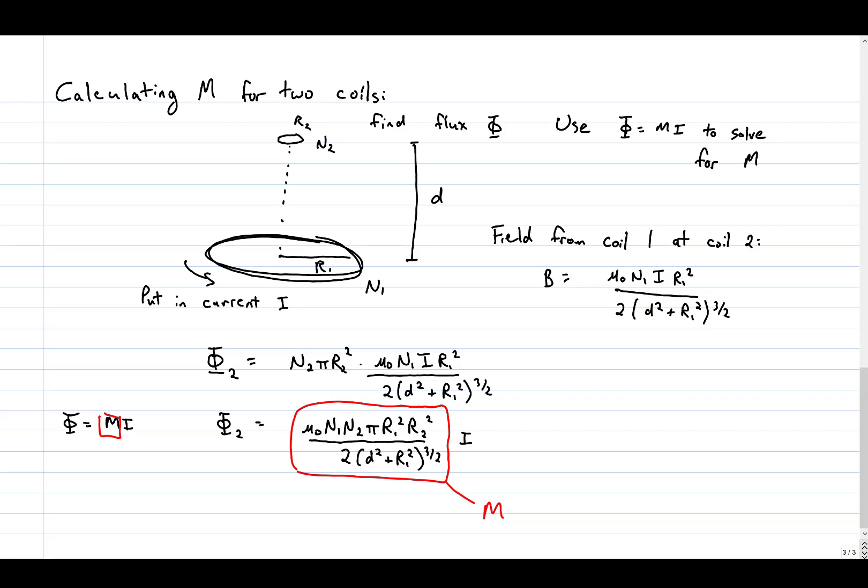Note that to get the mutual inductance of this pair of coils, we put a current in coil 1, and found the flux through coil 2. We could, in fact, have gone the other way, and put a current in coil 2, and found the flux through coil 1.